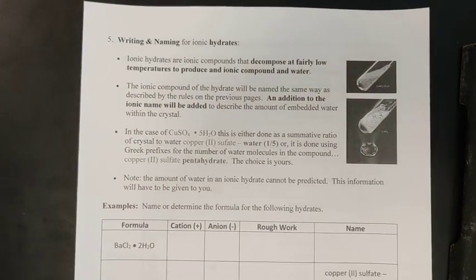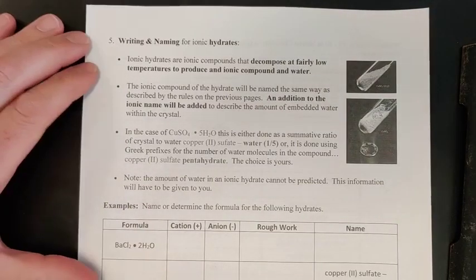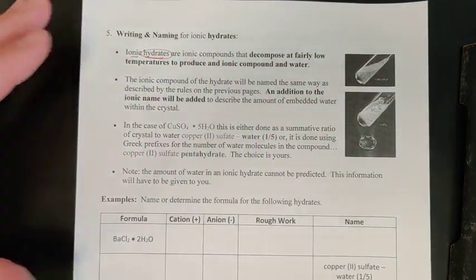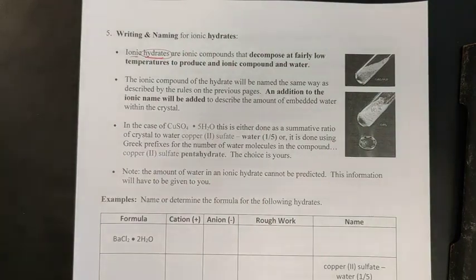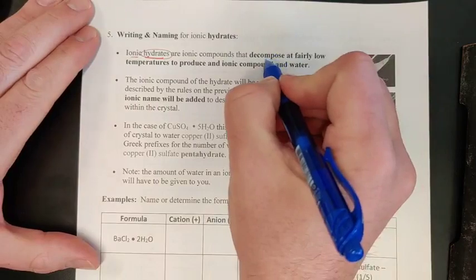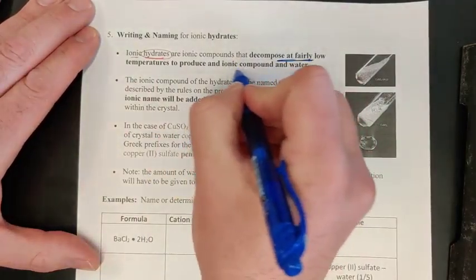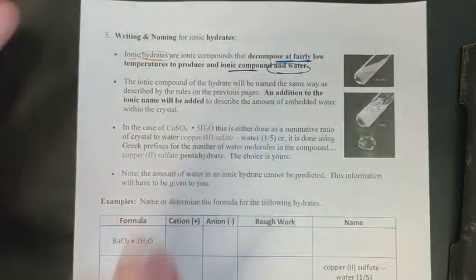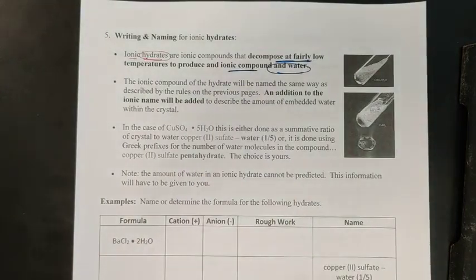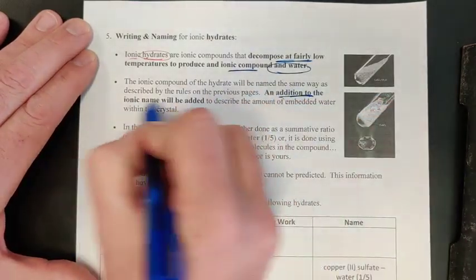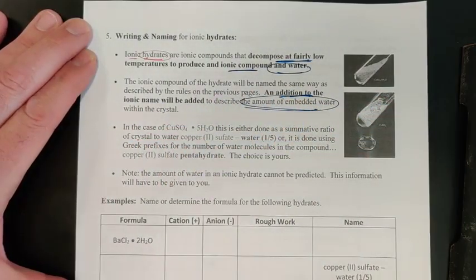One last thing to cover is writing and naming ionic hydrates. These are another type of ionic compound where the word 'hydrate' tells us we're dealing with something that includes water. Ionic hydrates decompose at fairly low temperatures and always produce the ionic compound and some quantity of water. The ionic compound part is named exactly the same as everything we've done so far; we just add onto the name to describe the amount of embedded water.